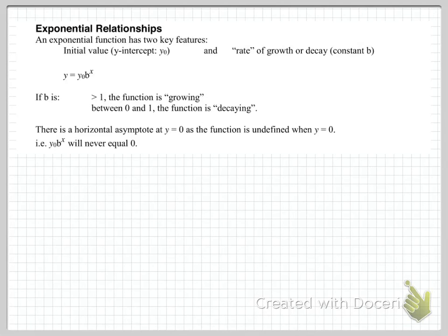We're following the exponential relationships handout from Friday's lesson. Remember that there are two key features in an exponential function. The constant y0 gives the value of the y-intercept, and the constant b, which is raised to the power of x, is the rate of growth or decay of the function.